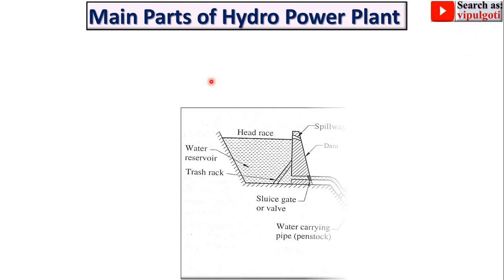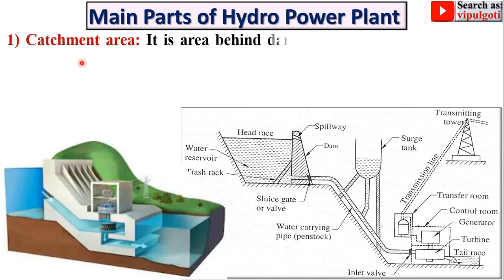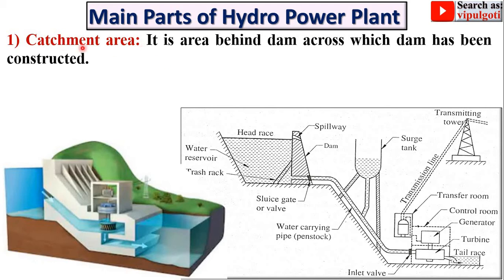Now let us see the main parts of a hydro power plant. Starting with the first: catchment area. This is a very essential terminology to understand the hydro power plant. It is the area behind the dam. Here you can see this is the dam, and behind the dam this is called the catchment area across which the dam has been constructed. From the catchment area, water is collected into the water reservoir.